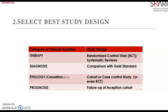Therapy is best answered by randomized controlled trials and systematic reviews. In randomization, it avoids selection bias. It's a study with two groups — a treatment group and a control group. The treatment group receives the treatment under investigation, and the control group receives a placebo. Both groups are then followed up.